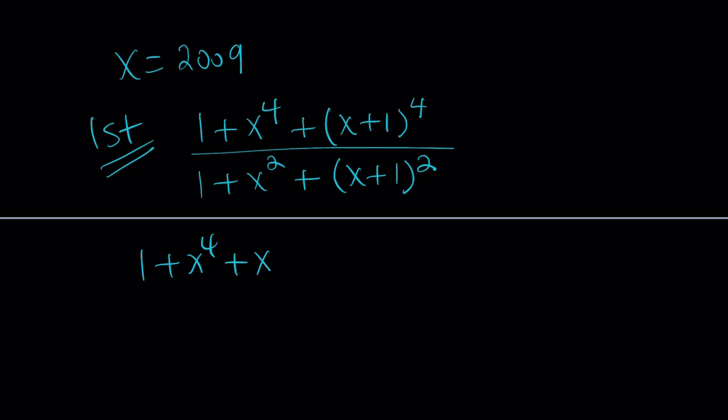Let's expand first, and now we'll try to simplify. 1 plus x to the 4th, plus x to the 4th, plus 4x cubed, plus 6x squared, plus 4x, plus 1. Remember, binomial theorem, Pascal's triangle. And then 1 plus x squared, plus x squared, plus 2x, plus 1.